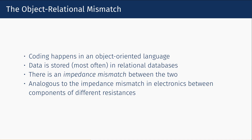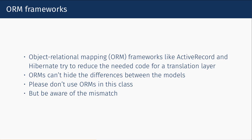A big motivator for NoSQL and other storage approaches is the mismatch between relational data storage and object-oriented code. This has come to be called the object-relational impedance mismatch, analogous to the impedance mismatch in electronics between components of different resistances. Solutions have arisen — ORM tools — but I don't want you to use them in this class because they're not very good in my view. What they do is hide the database as much as possible, and this is a database class, so I don't want that. They also don't totally hide the differences between the models, so you should be aware of this mismatch.